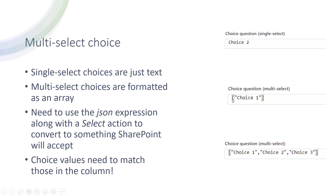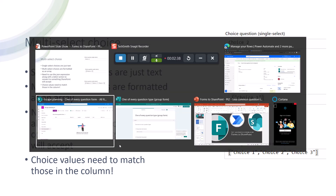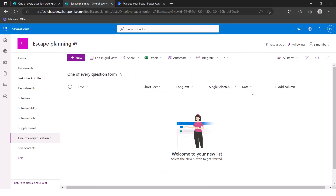You could do text manipulation to remove the brackets and quotes, but there's a much easier way. We need a JSON expression to tell the flow this is JSON data and treat it as an array, and then a Select action to convert that array into the format SharePoint wants.